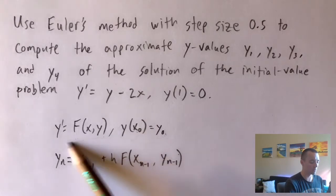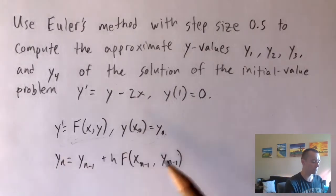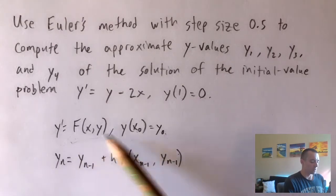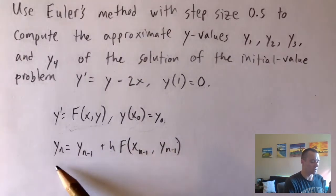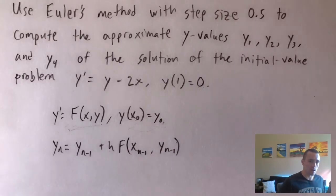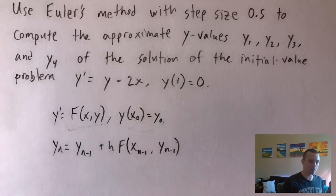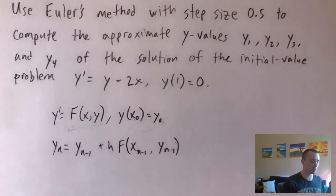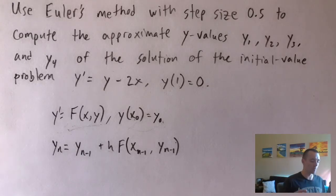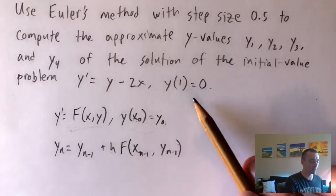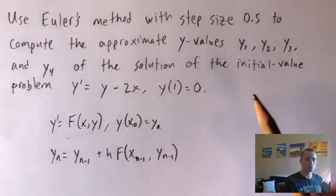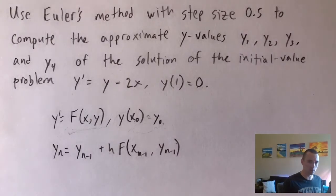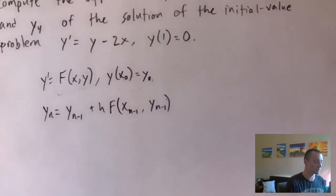Using these two pieces of information, we can use the Euler's method formula and iterate through it however many times we need to figure out the next y value. In this case we need to find y₁, y₂, y₃, and y₄ — four values — where our y₀ is our given starting value. Usually the best way to do these problems is to set up a table and fill it in left to right, going down row by row.